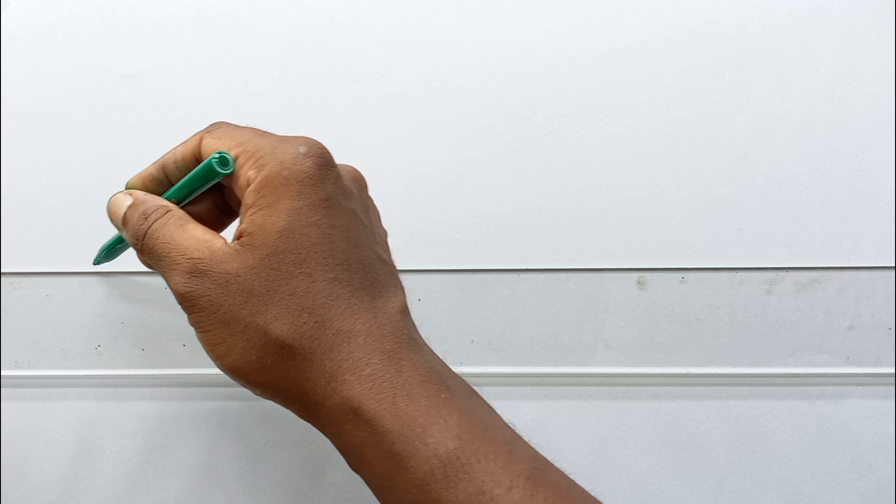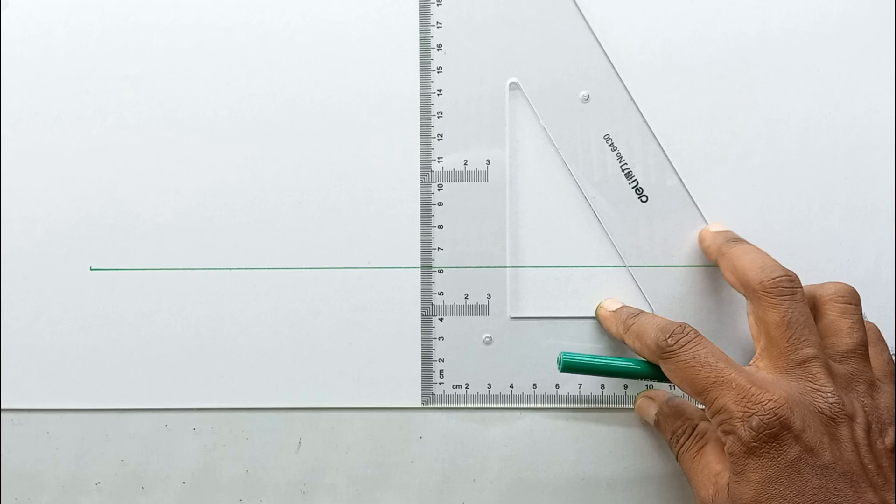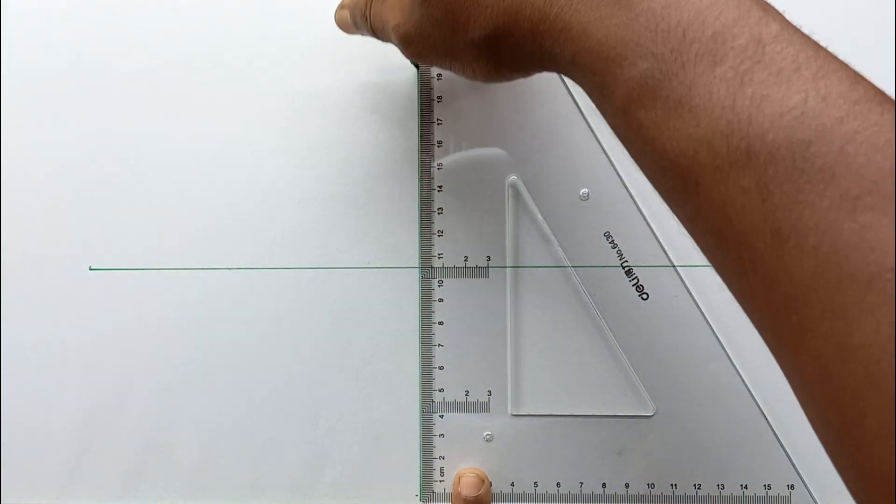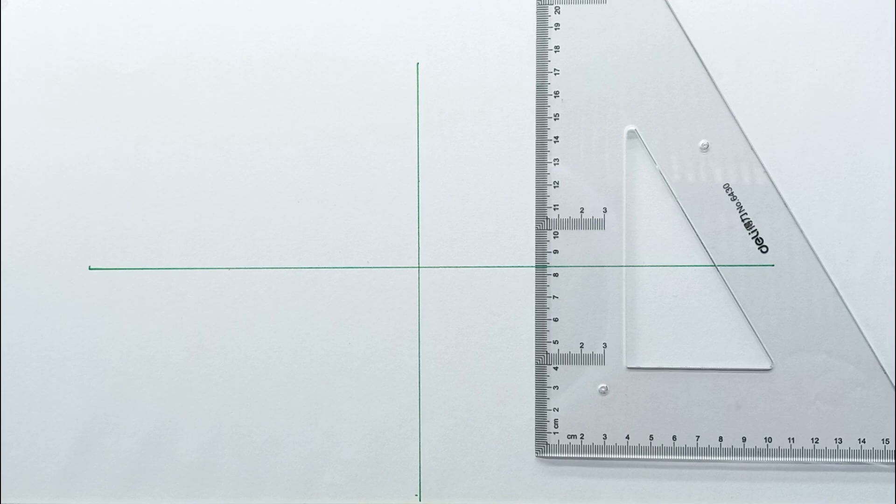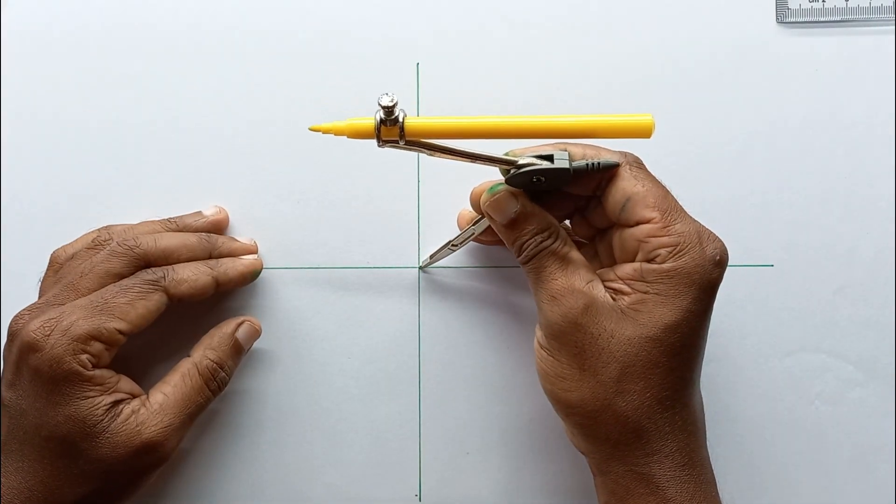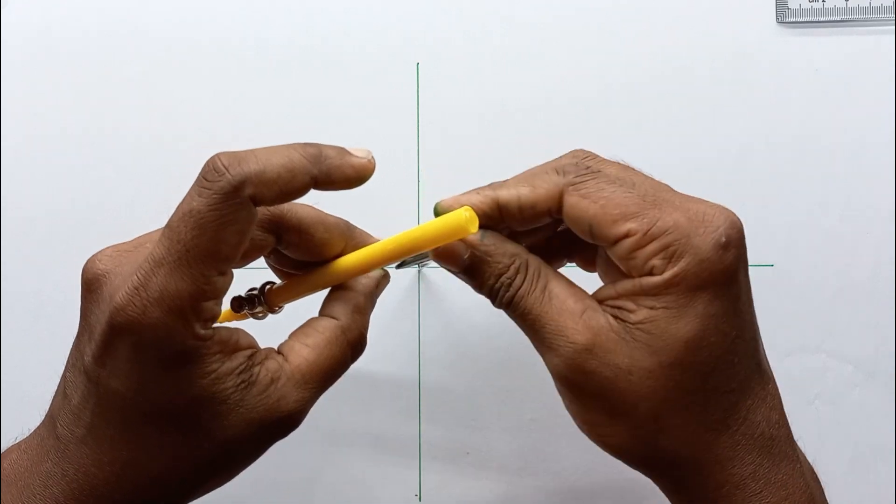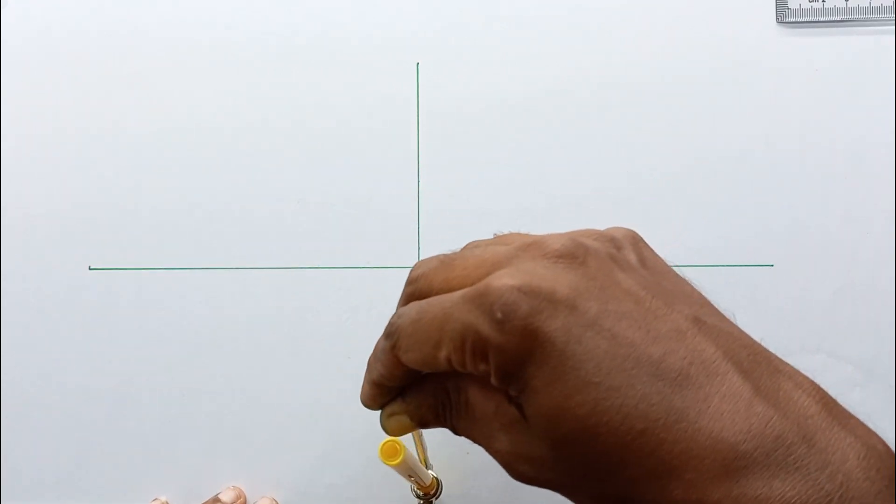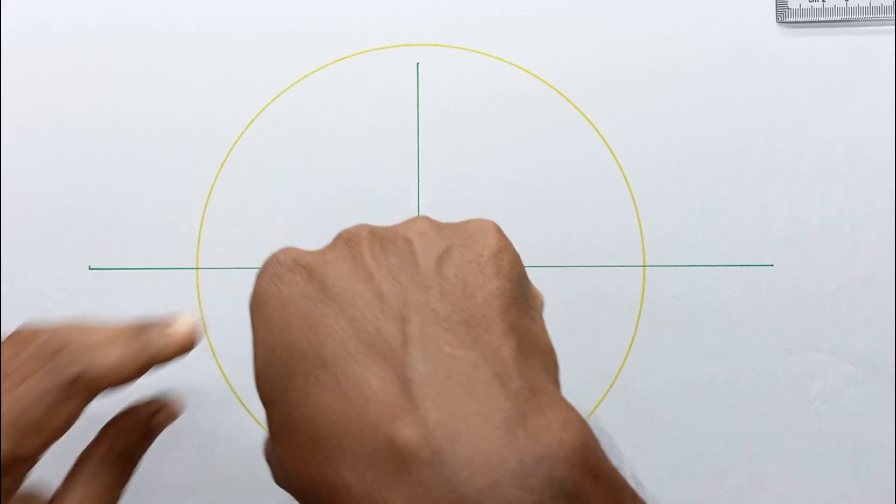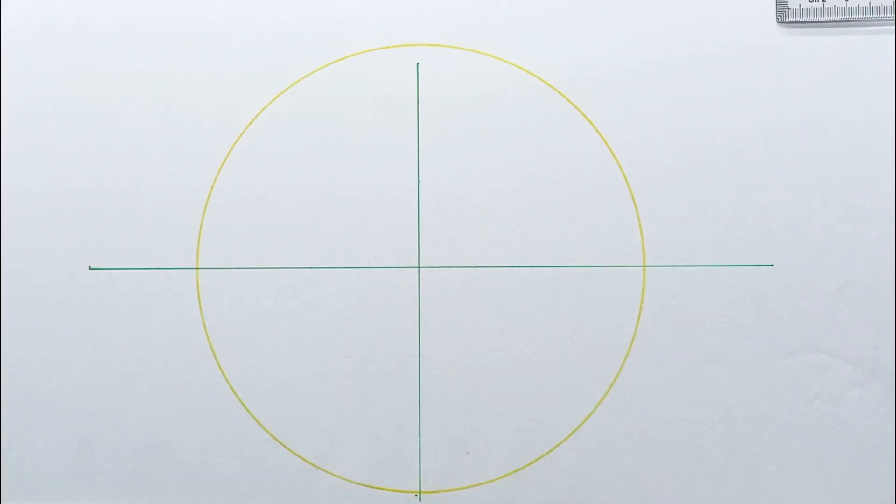Let's draw the horizontal line like this and the vertical line. Then a 100 millimeter radius circle. This is the circle.